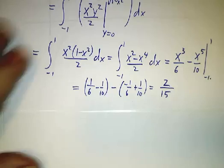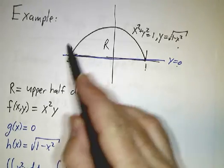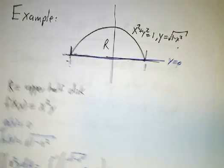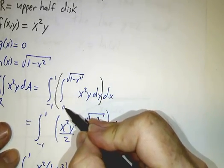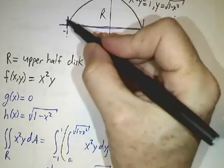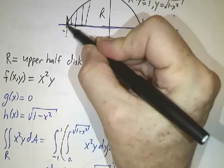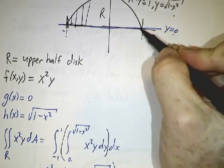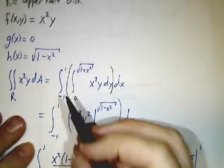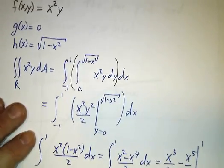So the big ideas are draw a picture. Figure out what the lower limit is, what the upper limit is. That tells you what y goes from. It goes from 0 to root 1 minus x squared. Figure out where the leftmost column is. The leftmost column is at negative 1. The rightmost column is at 1. So the limits of integration on x are negative 1 to 1. And then the rest is mechanical.